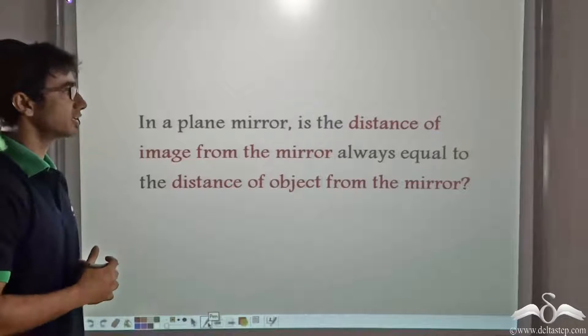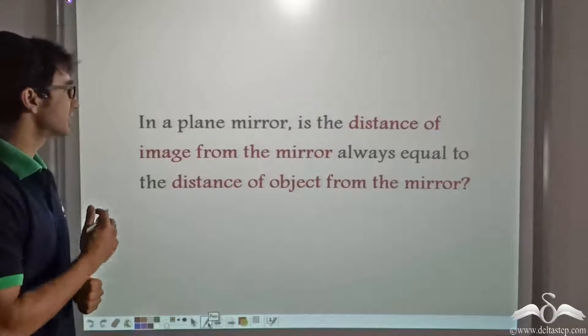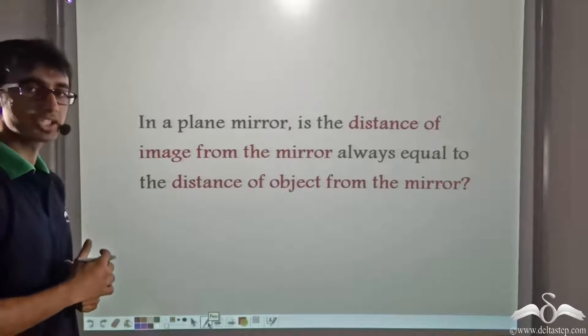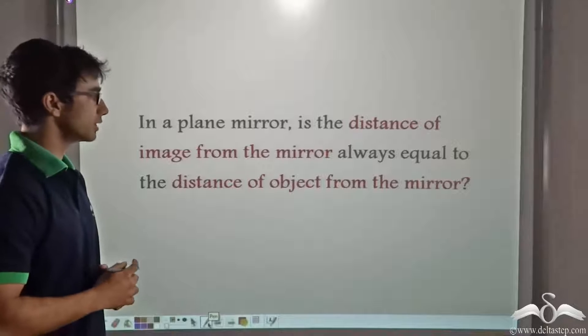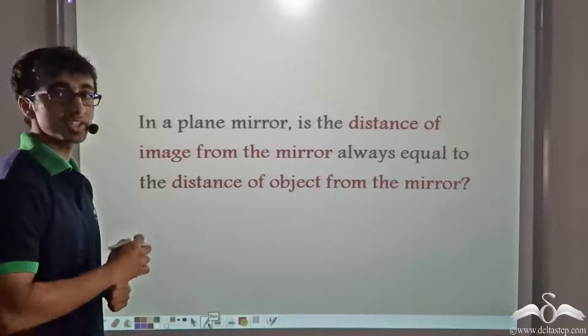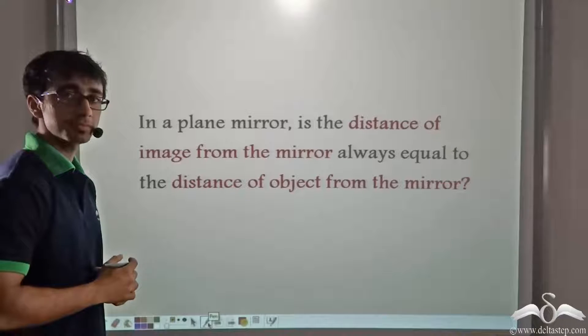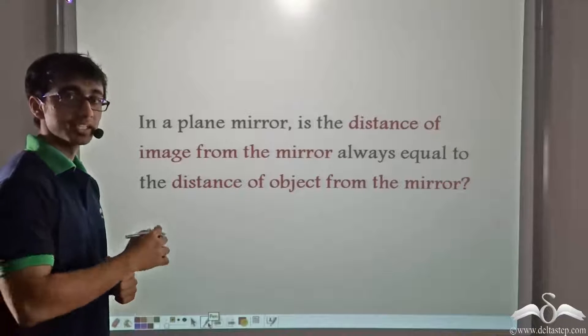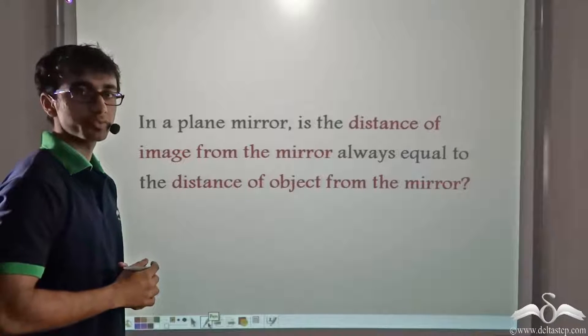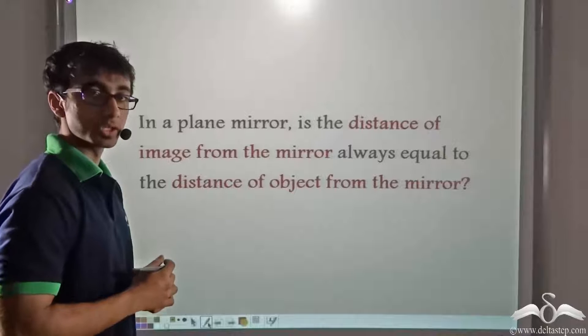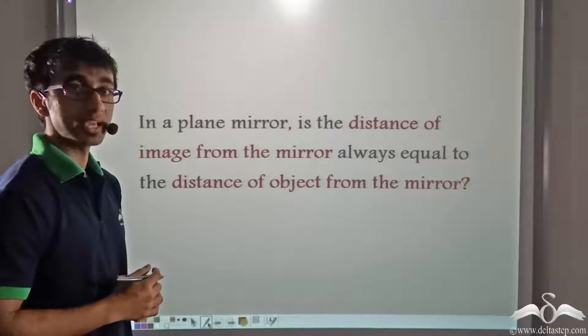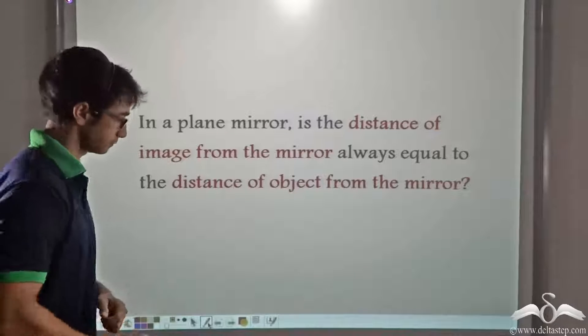In a plane mirror, is the distance of the image from the mirror always equal to the distance of the object from the mirror? Here we are going to prove that these two distances are equal with the help of a ray diagram.